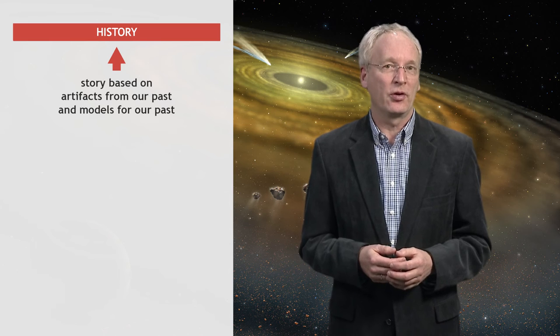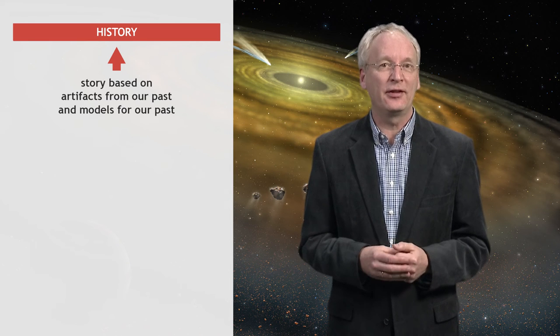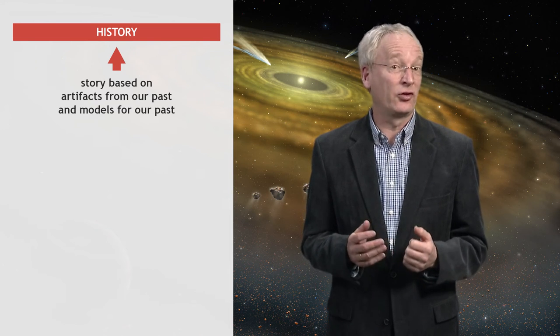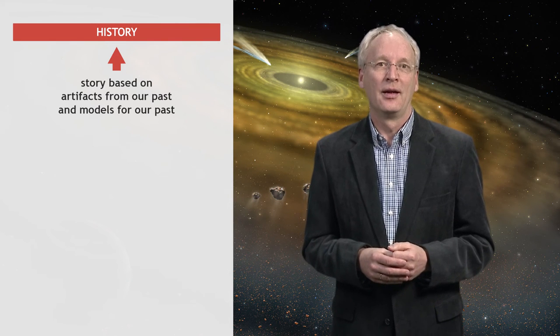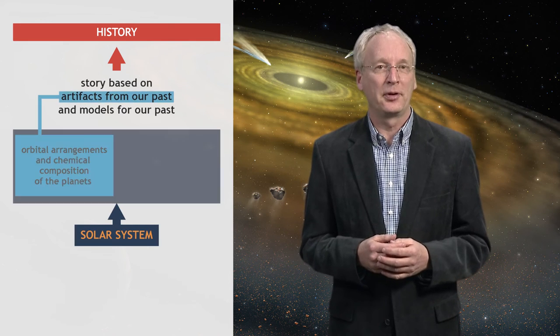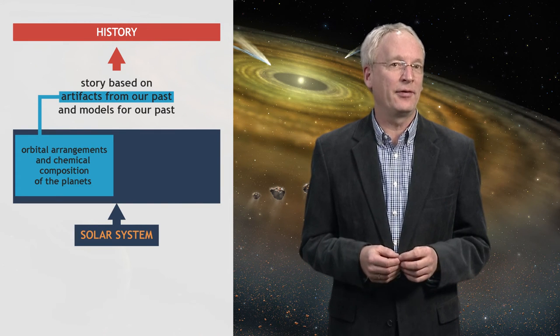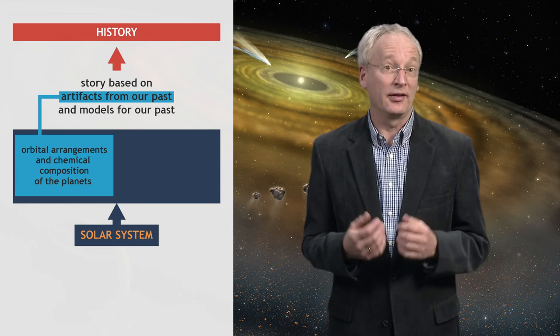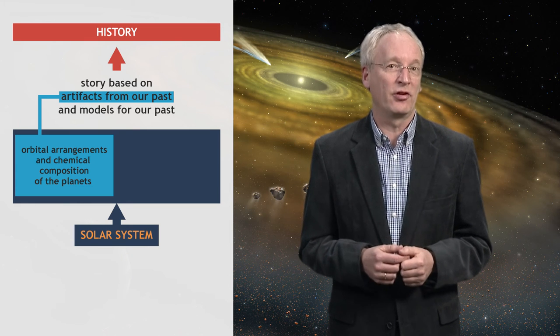Studying history always follows the same basic principles. We are looking for artifacts from our own past, or we are looking for situations and locations that we believe are good models for our past, to study what's going on there. And then we spin these facts into the best story that we can make. In the case of the solar system, the artifacts are the precise orbital arrangement of everything in the solar system, as well as other things like, for example, the chemical composition of planets.